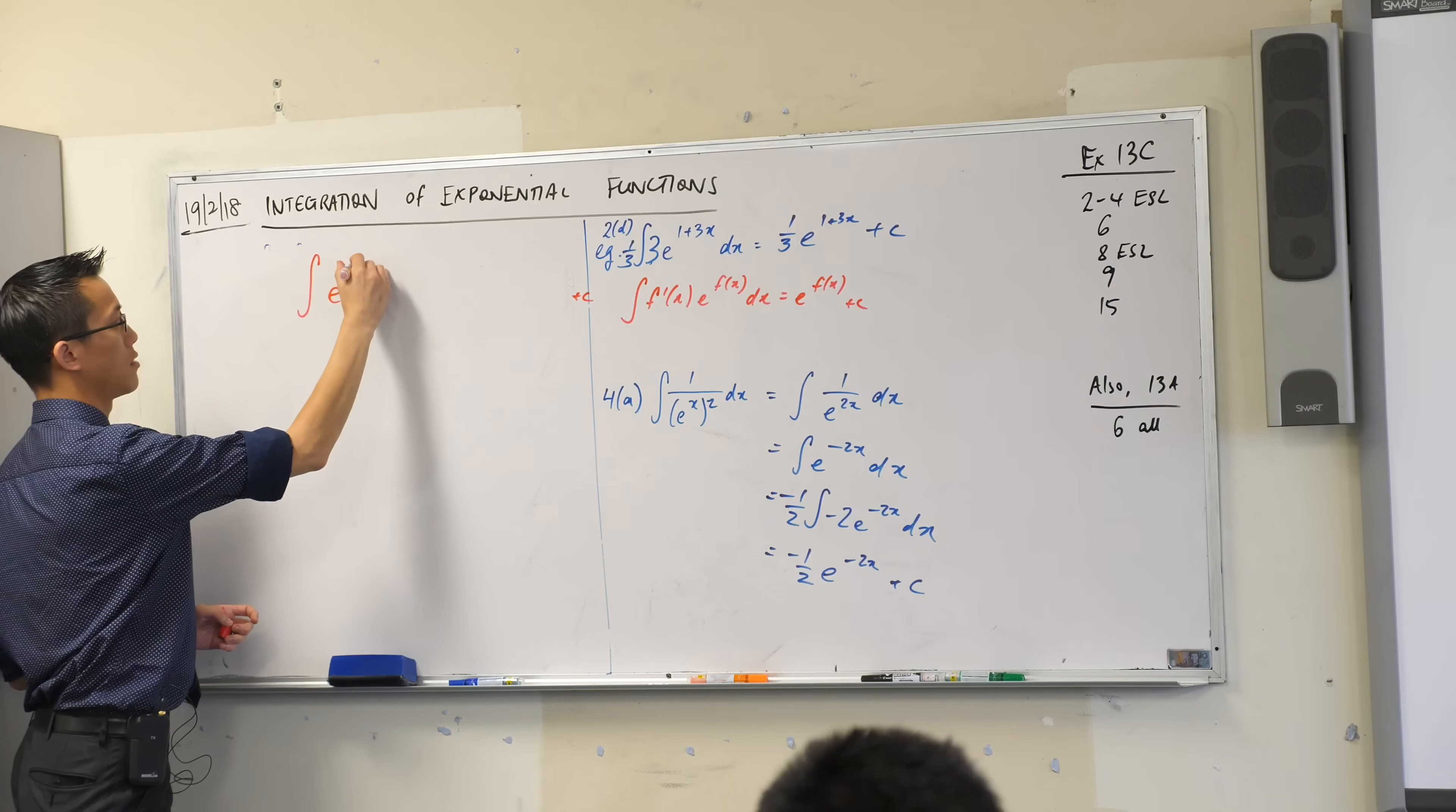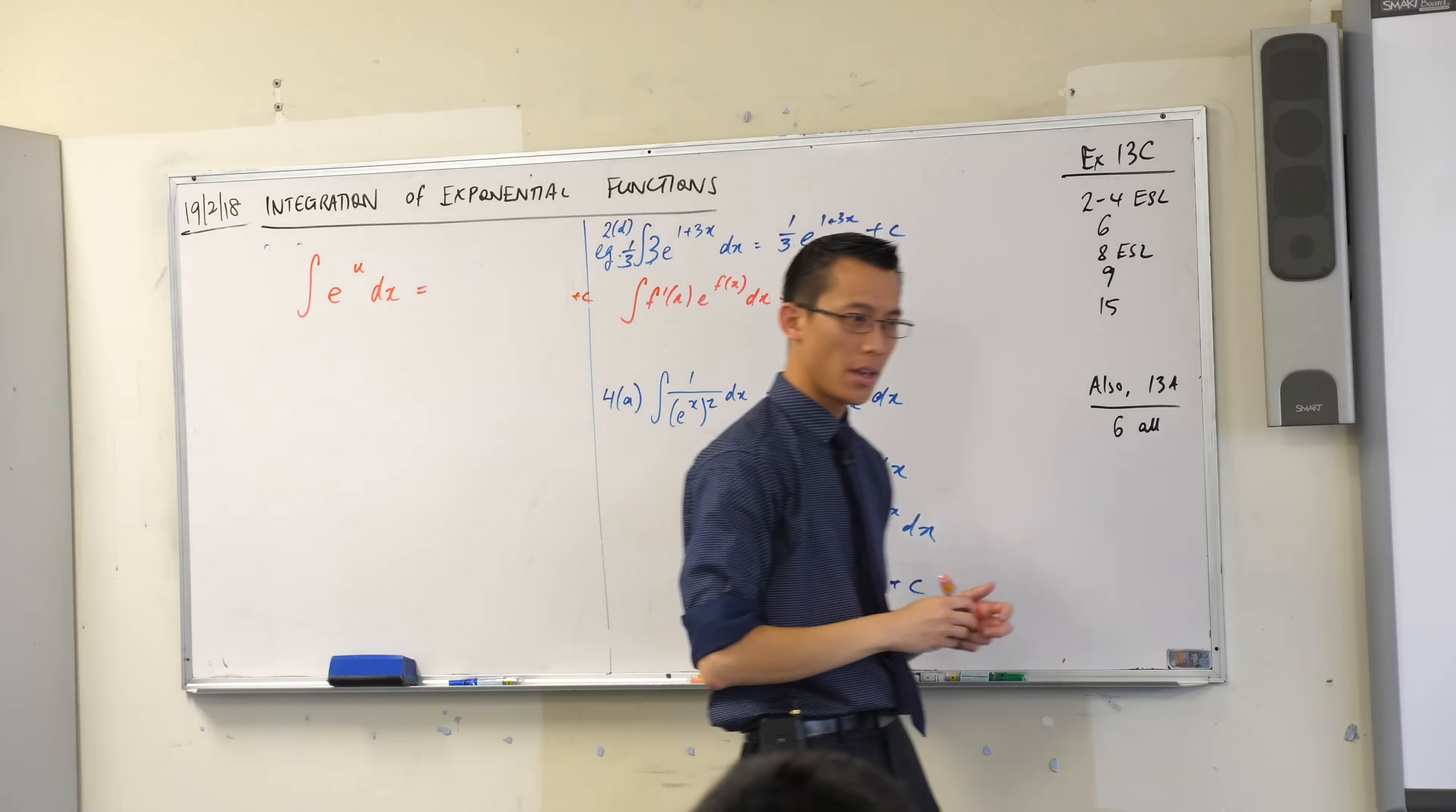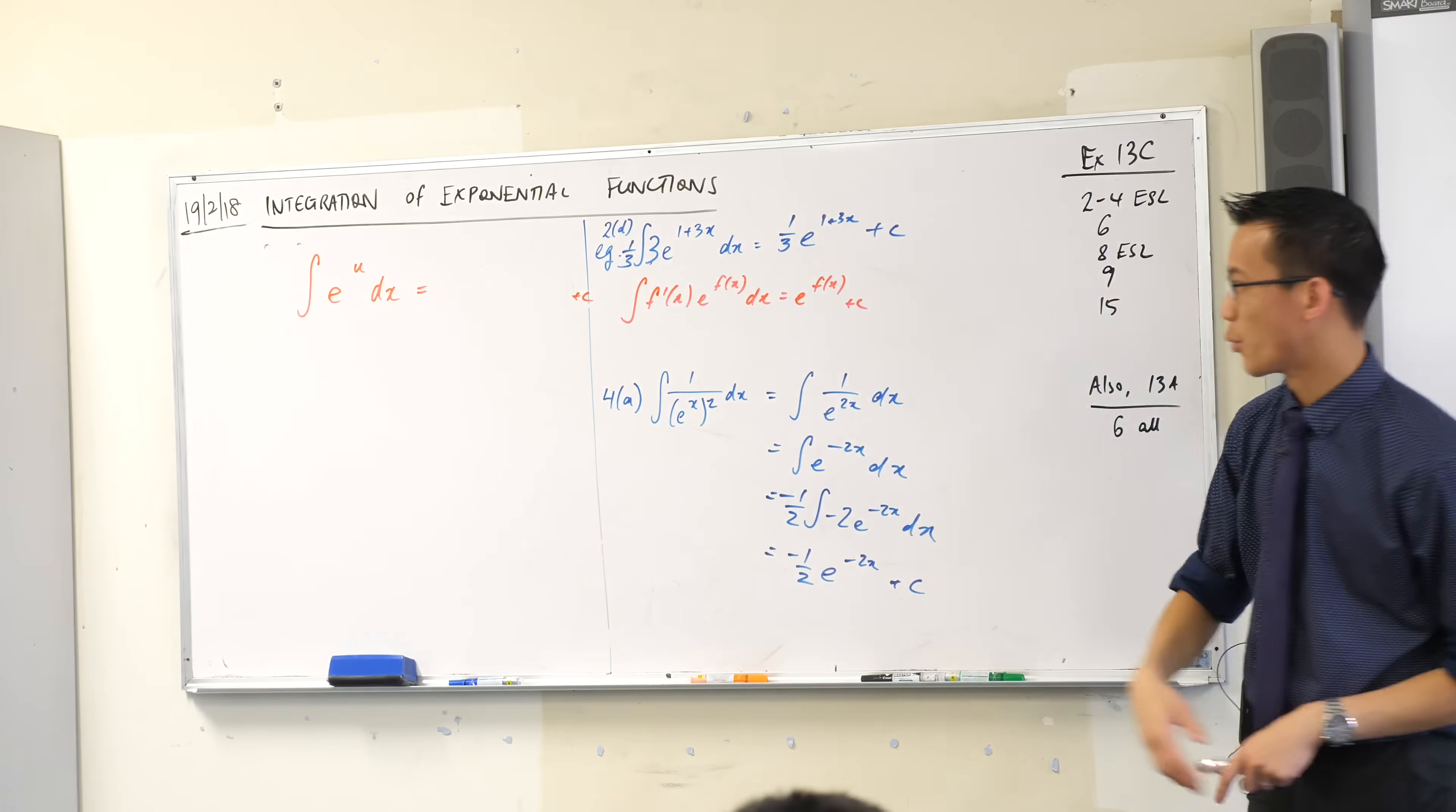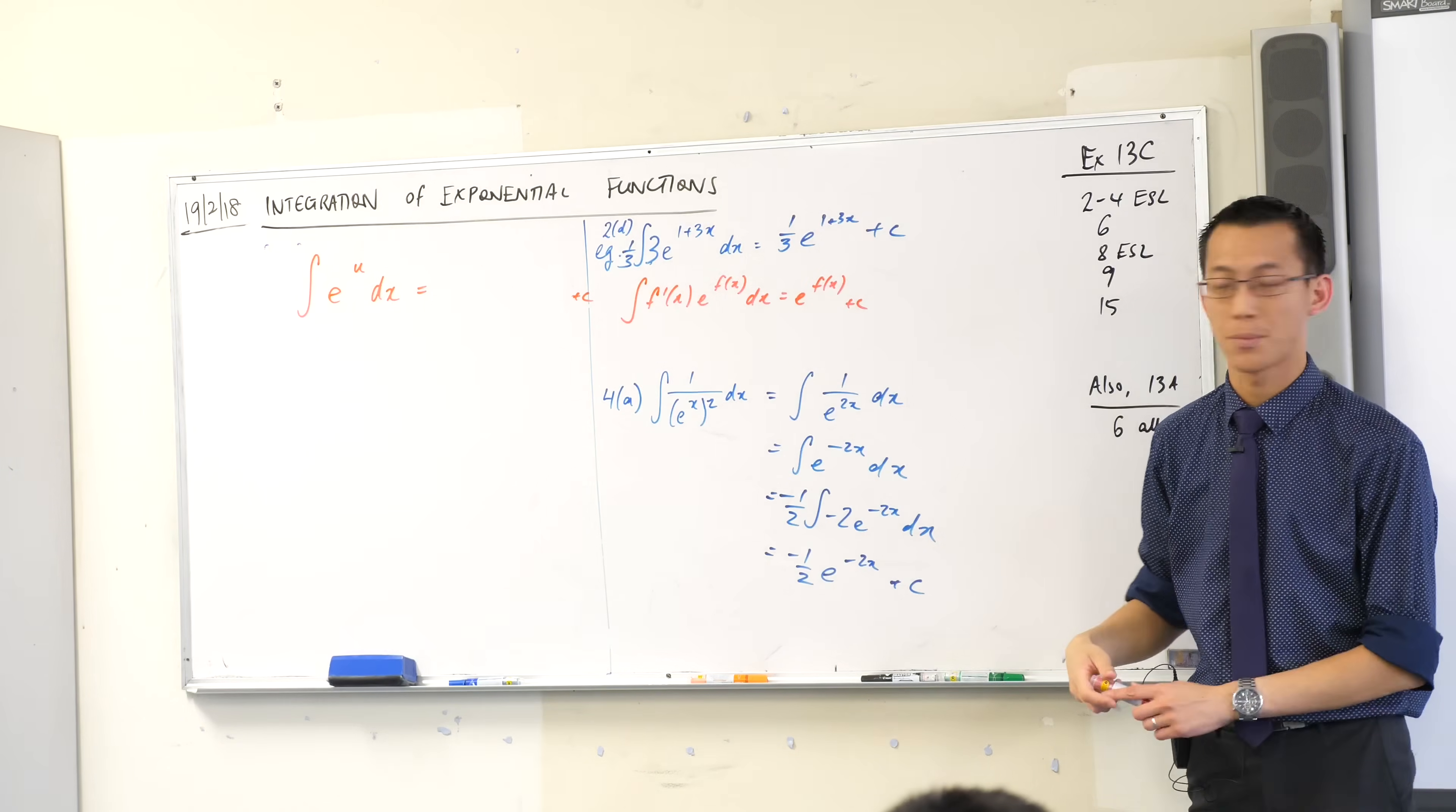Let's go like this. E to the u. So what are we looking at here? So u is a common letter that we use for substitution, right? So we would often say let u equal and then it'd be the 1 plus 3x or the minus 2x or something like that.